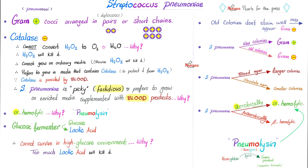The hemolysin causes lysis of blood — it breaks down hemoglobin, producing a green pigment. Recall biliverdin, which comes from the breakdown of hemoglobin — the word 'verd' or 'vert' means green. That's why alpha hemolysis produces that characteristic green color around the colonies.